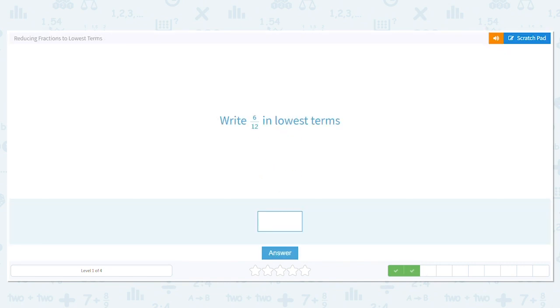Next one, 6 twelfths into lowest terms. I love this one. I already know that 6 is half of 12. I already gave you the simplified answer, the lowest terms. Because 6 divided by 6 is 1, and 12 divided by 6 is 2. 1 half.